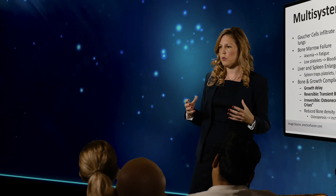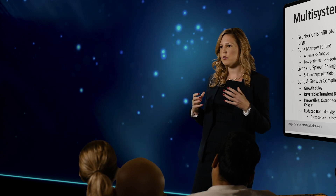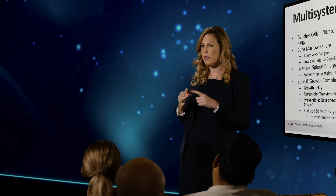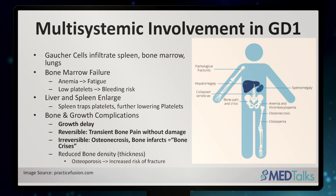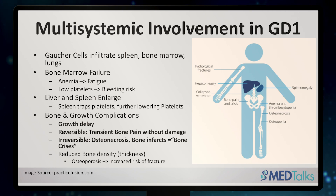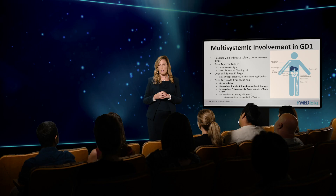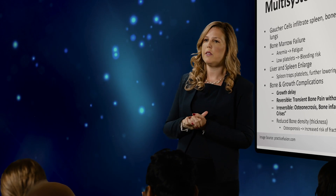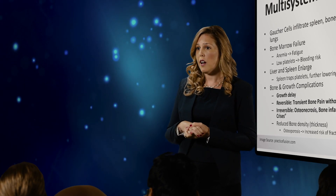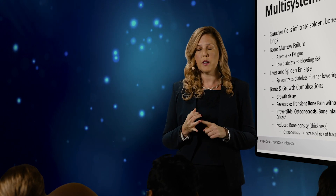That Gaucher cell then goes on to infiltrate throughout the body. It can infiltrate the liver and enlarge it, infiltrate the spleen causing splenic enlargement and further sequestration of platelets. It can infiltrate the bone marrow where it can suppress blood cell production. The bone marrow is critical for your white blood cell, red blood cell, and platelet production. In Gaucher disease specifically, we have a reduction in our platelets. Platelets are really important in controlling bleeding.